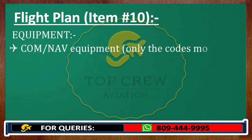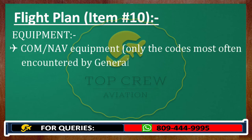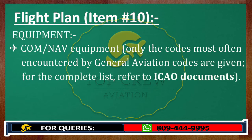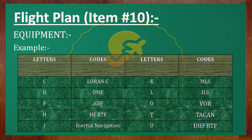Only the codes most often encountered by general aviation are given here; for a complete list, refer to ICAO documents. For example: LORAN = Charlie, DME = Delta, ADF = Foxtrot, HF RT = Hotel, Inertial Navigation = India, Microwave Landing System = Kilo, ILS = Lima, VOR = Oscar, TACAN = Tango, and so on. You can refer to the ICAO list if you want to go through all the codes.